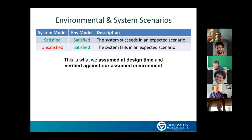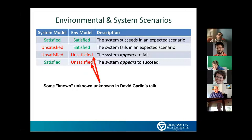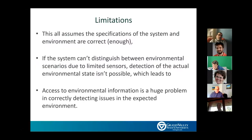At design time we want a satisfied environmental model. If we had a perfect environmental model it would always be satisfied and we could verify against it, but that's not practical. There will be times when we have an unsatisfied environmental model — some of those known unknowns from David Garland's talk — where something appears to fail or succeed but wasn't expected in the environment. In that case we probably need to adapt, move to a fail-safe, or at least be aware of that possibility.